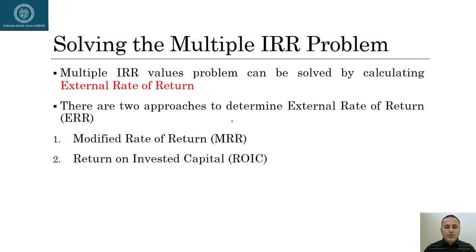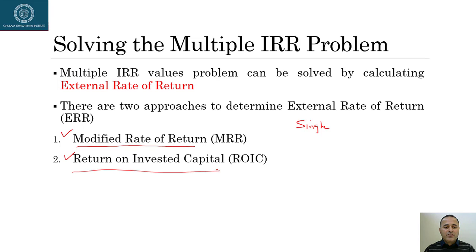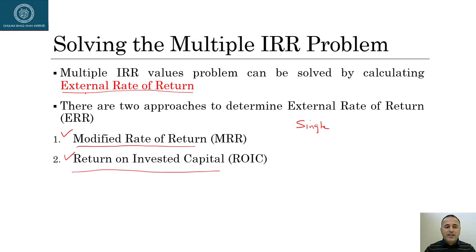In my last lecture I told you that if we have a situation of multiple IRRs, I have to apply some techniques and arrive at a single IRR. Multiple IRRs do not help because they don't give me enough information about which IRR to use for project selection. So I will use two techniques — the modified rate of return and the return on invested capital — to arrive at a single IRR. Since we will be using some outside information not included in the cash flow series, the rate we calculate is called the external rate of return.